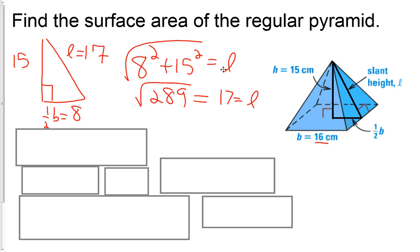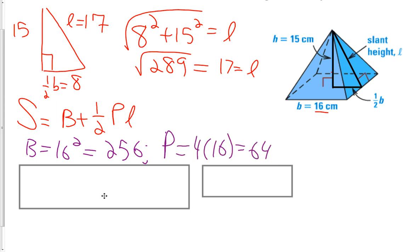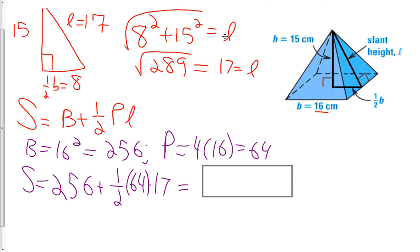Normally L squared equals H squared plus half base squared. Reminder that surface area is base plus half perimeter times slant height. Area of the base is 16 times 16 or 256. Perimeter is 4 times 16 which is 64. Then plug it in. 256 plus half of 64 times that L of 17 gives us an answer of exactly 800 centimeters squared.